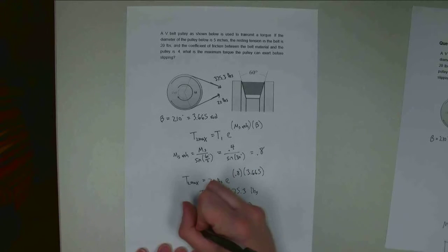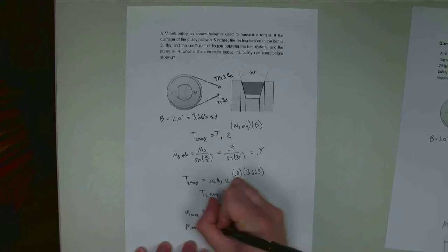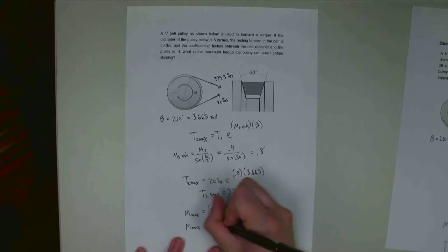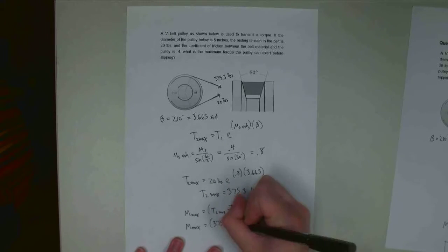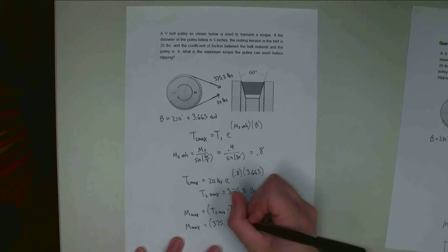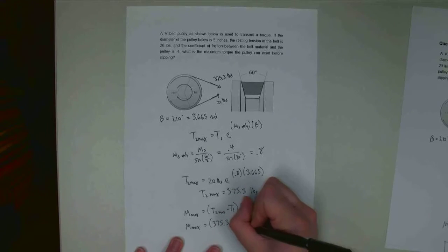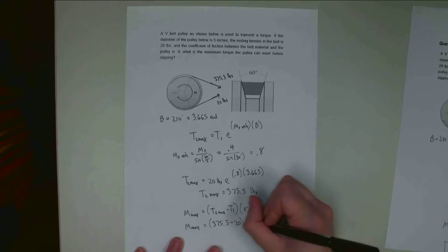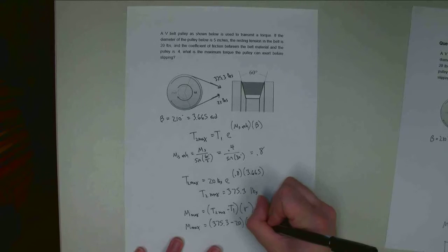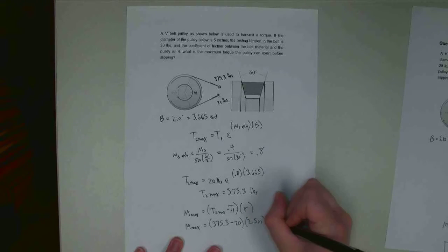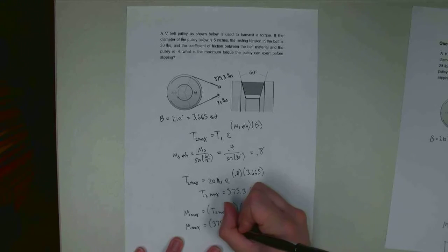All right, so M max is going to be 375.3 minus 20, multiplied by 2.5 inches. Both of these are pounds.